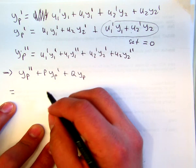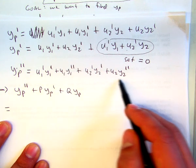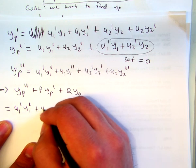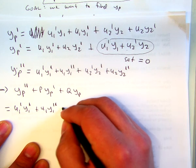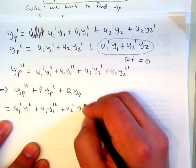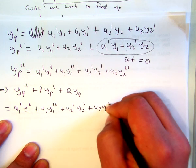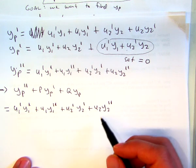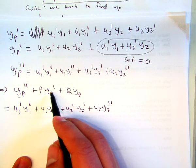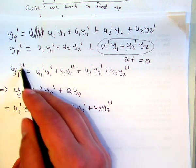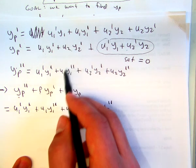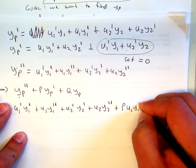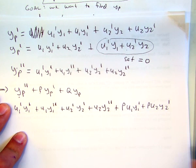This is going to be, and I'm just literally going to copy, yp double prime. That's this term, and now I'm going to take p times the first order derivative of yp. So just these two terms times p, that's going to be p u1 y1 prime plus p u2 y2 prime.